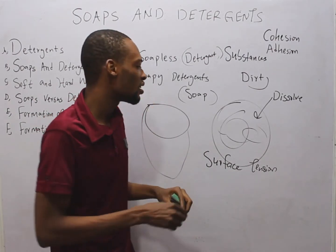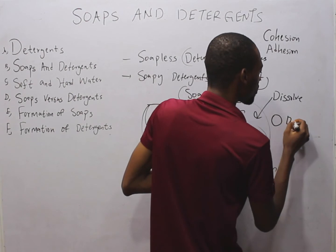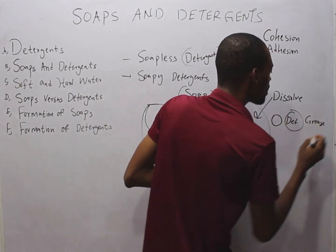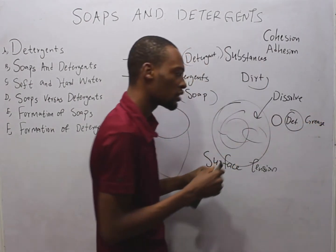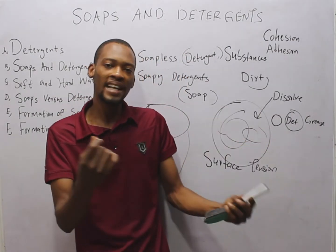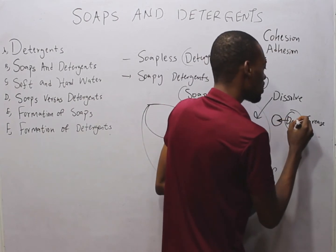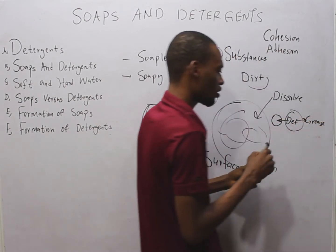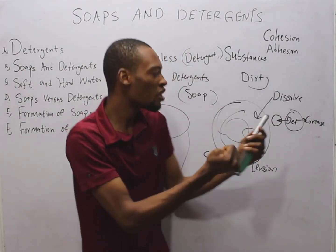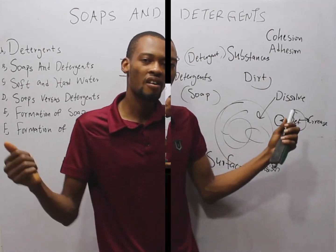Now, look at something else. If this is water, this is detergent or soap, and this is grease — this is the cleaning action. The soap or detergent has two parts: one part is attracted to water and the other part is attracted to grease. So with that, it brings them together. It tries to remove the dirt.